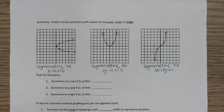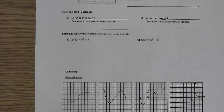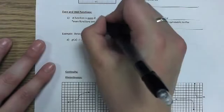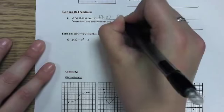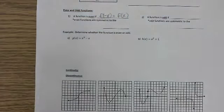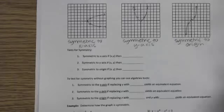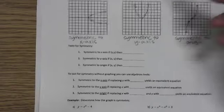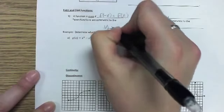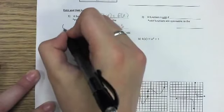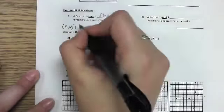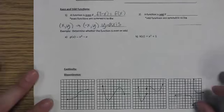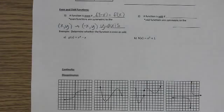Looking at the page for even and odd functions: a function is even — think parabolas — if when you plug in a negative x value, you still get the same y value. F of x represents a y value. For an even function, if I plug in positive one I get one; if I plug in negative one I still get positive one. Even functions are symmetric to the y-axis. Points x, y and negative x, y both satisfy the function.